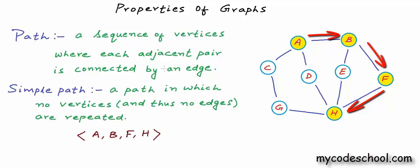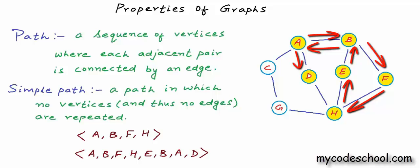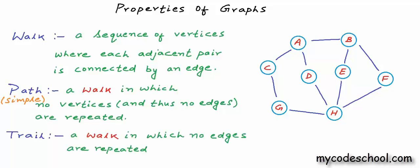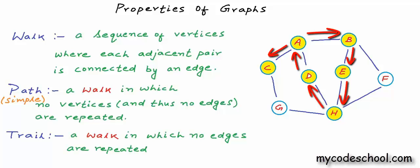This path a, b, f, h is a simple path, but we could also have a path where start vertex is a and end vertex is d, in which one edge and two vertices are repeated. In graph theory there is some inconsistency in use of the term 'path.' Most of the time when we say path, we mean a simple path, and if repetition is possible, we use the term 'walk.' So a path is basically a walk in which no vertices or edges are repeated. A walk is called a trail if vertices can be repeated but edges cannot. Walk and path are often used as synonyms, but most often when we say path we mean simple path — a path in which vertices and edges are not repeated.